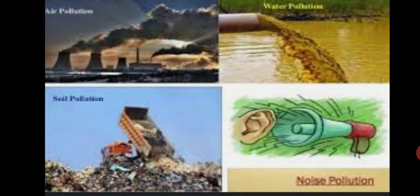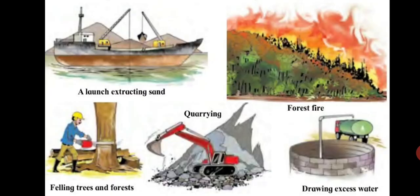The methods which lead to these various pollutions include: digging up hills for quarrying, extracting sand from seashores and riverbeds, extracting stone and earth from the ground, drawing out excessive amounts of groundwater, felling trees to clear land, and filling up ponds, lakes, streams, rivers, creeks and low-lying areas to reclaim land.